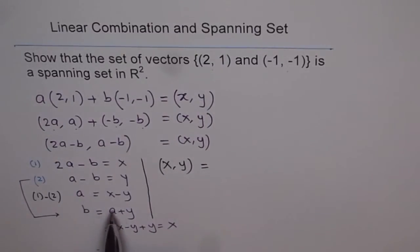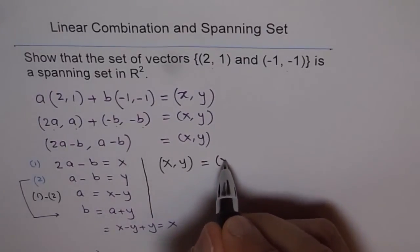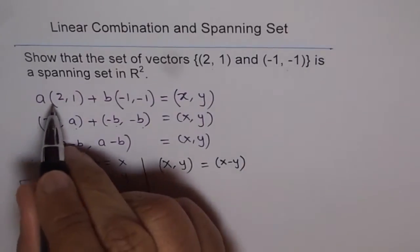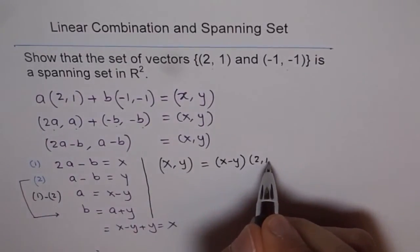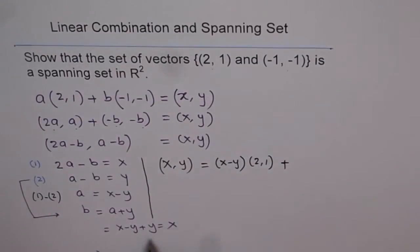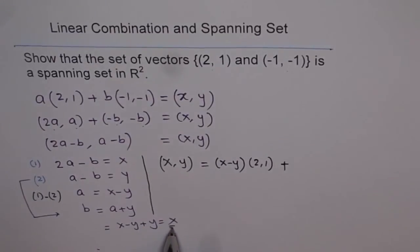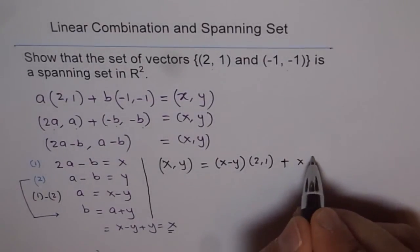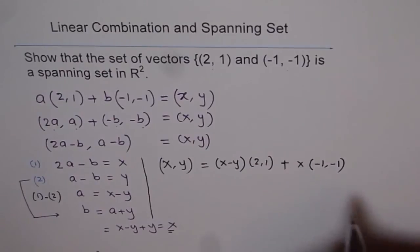(x - y) times (2, 1), plus the value of b, which we found was x, x times (-1, -1). Do you see that?